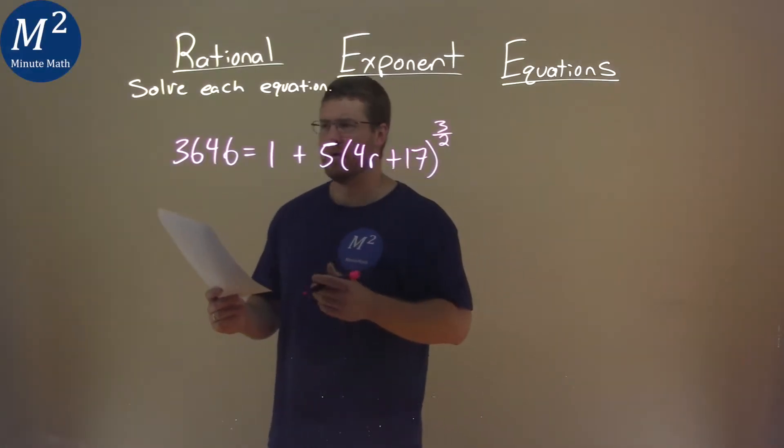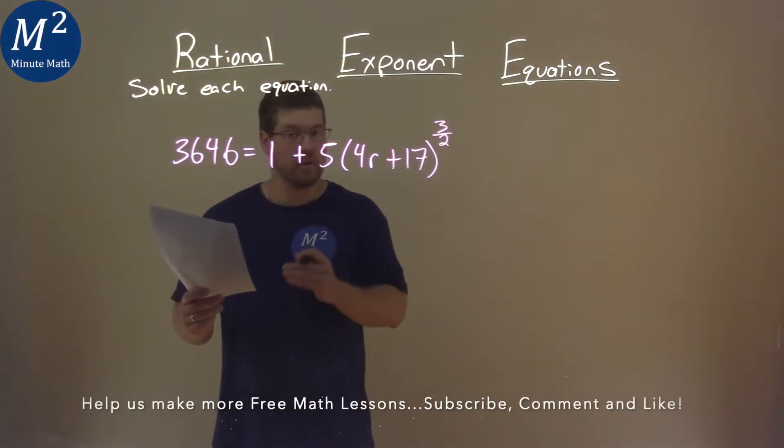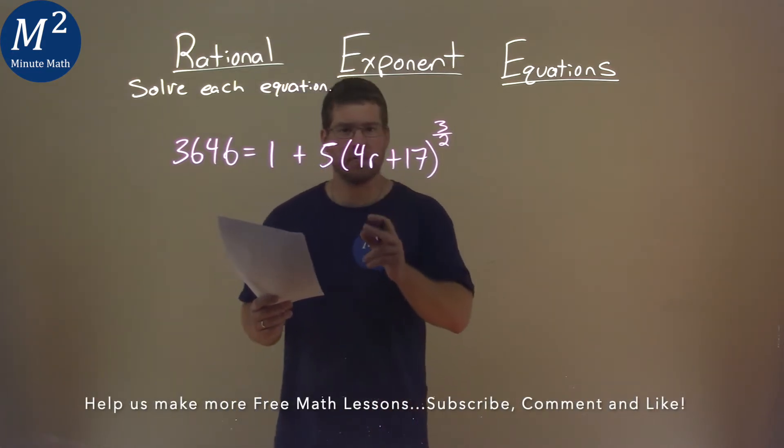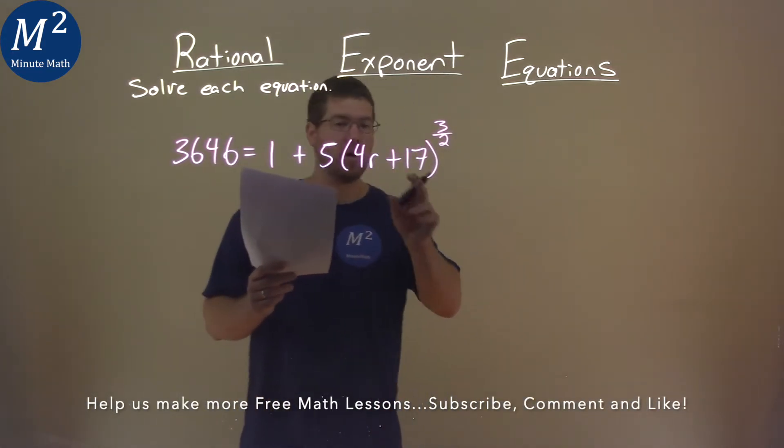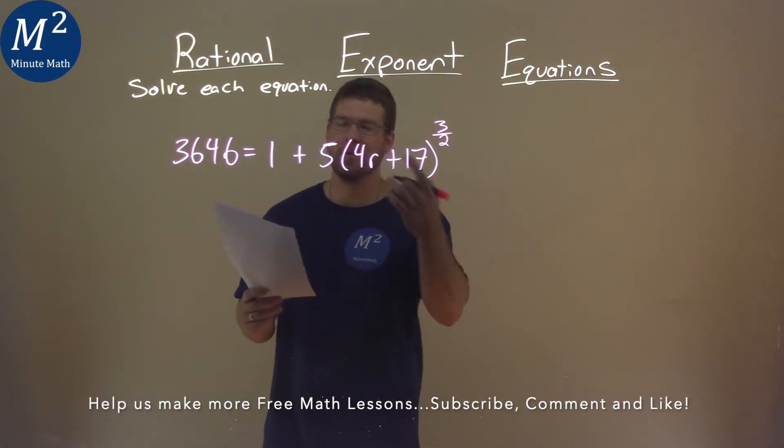We're given this problem right here. 3,646 equals 1 plus 5 times 4r plus 17, all of that to the 3 halves power, and we've got to solve it.